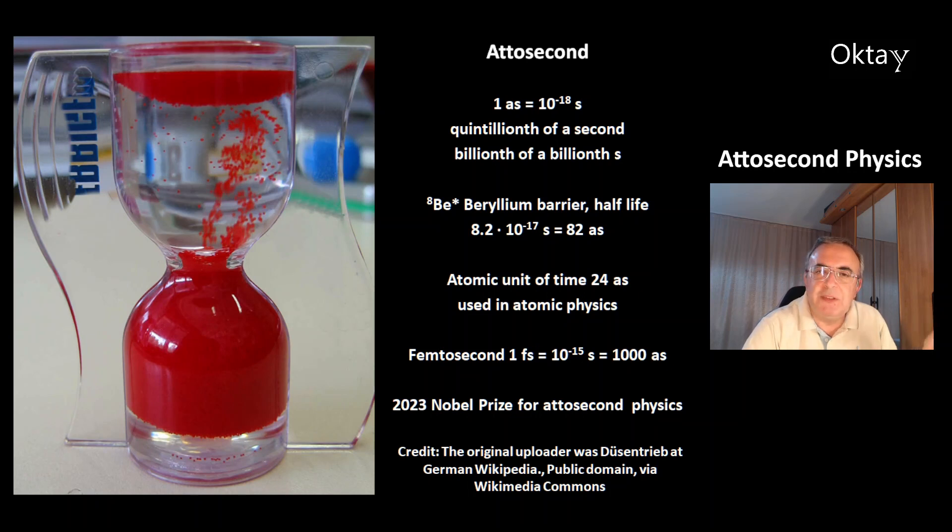For example, the unstable isotope B8, which is responsible for the beryllium barrier. Its half-life is 8.2 times 10 to the minus 17 seconds. In attoseconds, that's 82 attoseconds. Then there's an atomic unit of time that's 24 attoseconds. This is used in atomic physics.